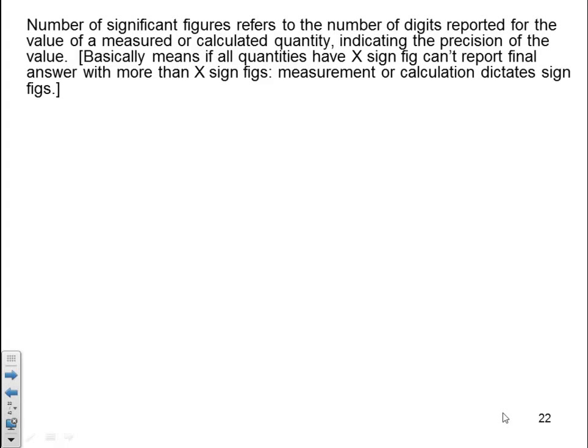The number of significant figures refers to the number of digits reported for the value of a measured or calculated quantity, indicating the precision of the value. Basically, this means if all quantities have x significant figures, you can't report your final answer with more than x significant figures. The measurement or the calculation dictates the number of significant figures. We have some rules to help us decide how many significant figures a final answer should be, whether a measured value or calculated.